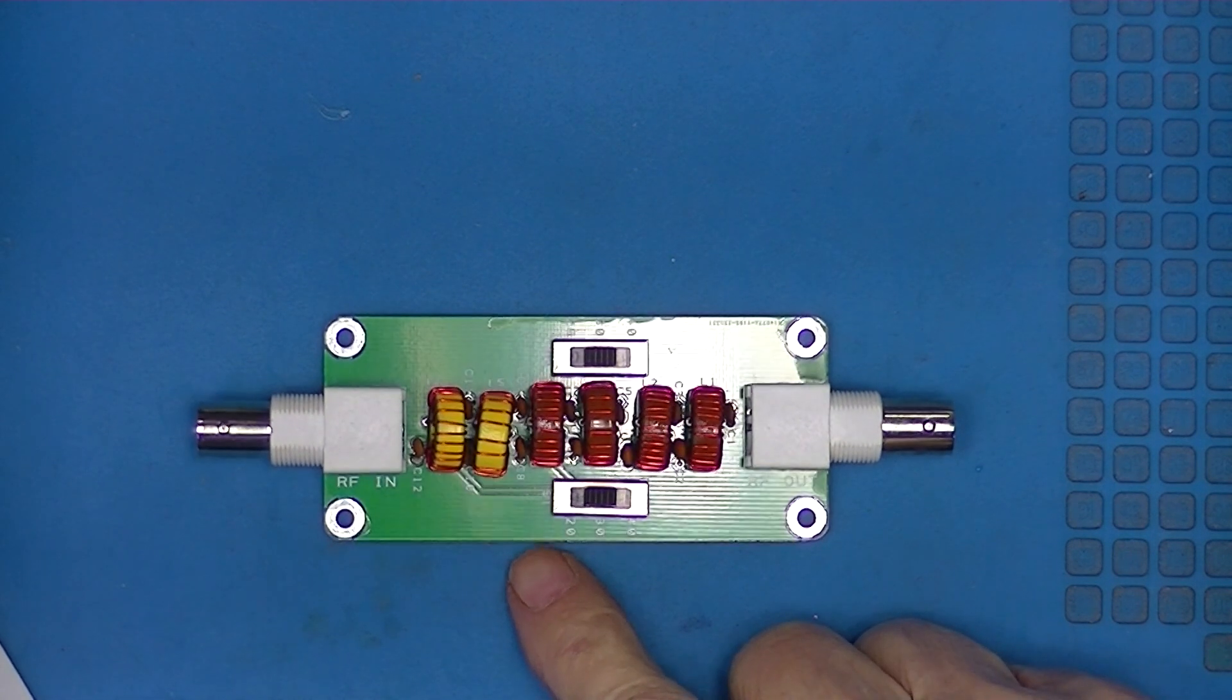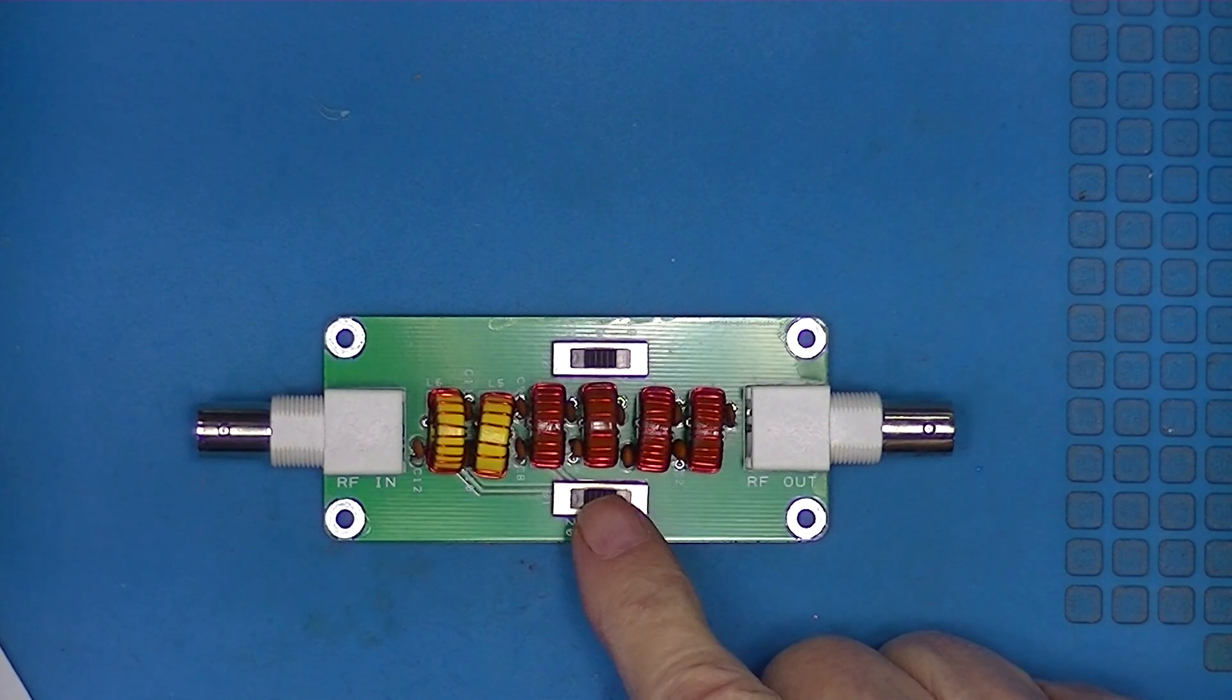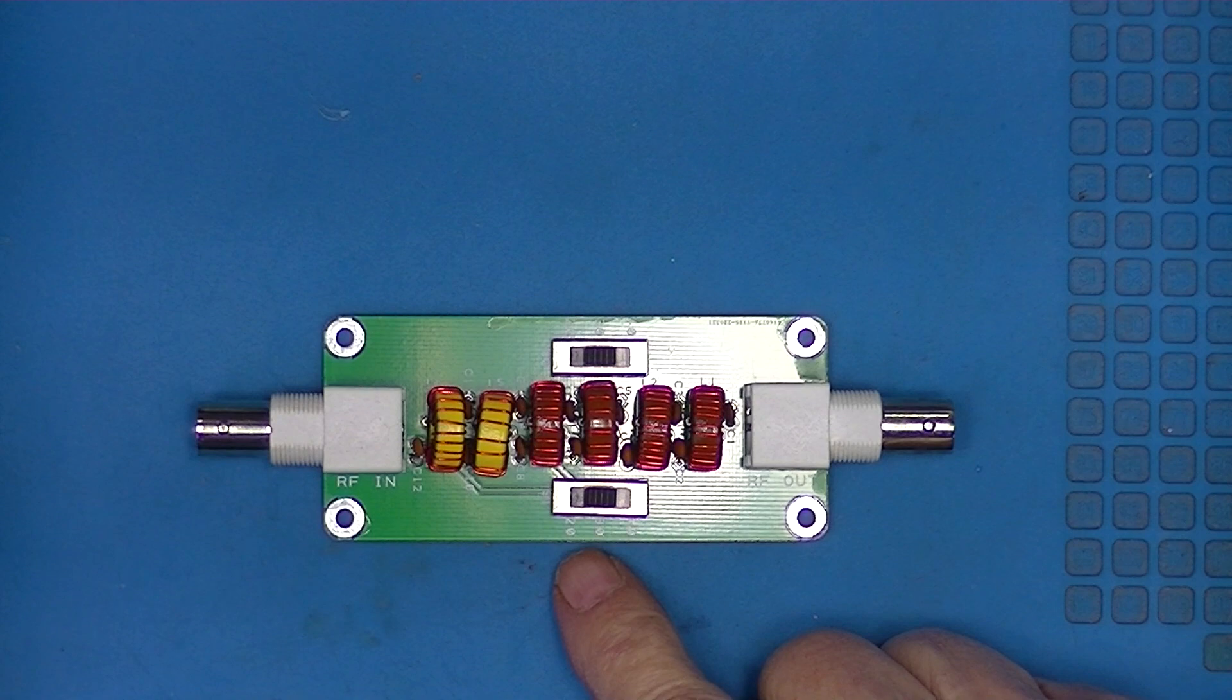This is a switchable low-pass filter that I obtained from AliExpress. It can be operated on the 20, 30, or 40 meter amateur bands. Now, the frequencies associated with these bands...